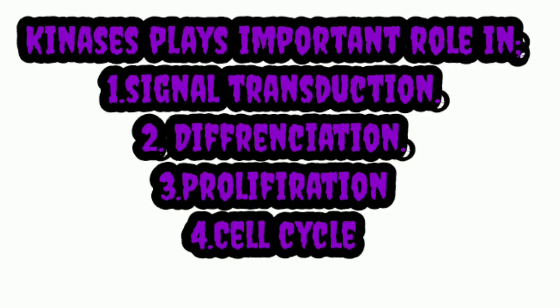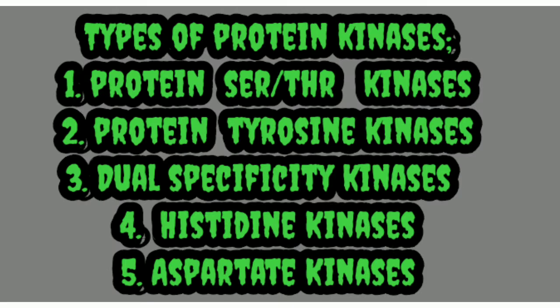This is the mechanism of action of kinases. Kinases play a crucial role in major cellular processes like signal transduction, cell differentiation, cell proliferation, and cell cycle progression. Protein kinases can be classified by the types of amino acids that they phosphorylate in protein targets. Five groups of protein kinases are distinguished by the types of amino acid targets.